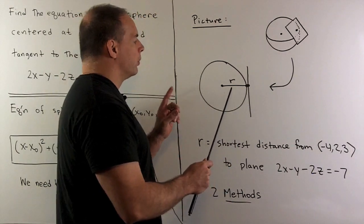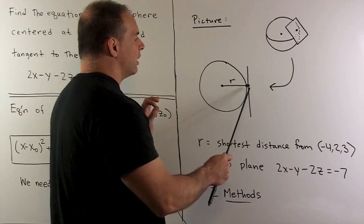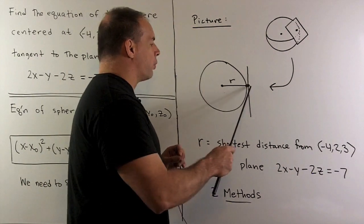So you'll note what's happening here. The radius is going to be the shortest distance from our center to this plane. So that's what we're looking for.